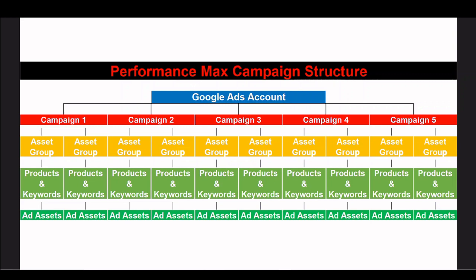Beneath each campaign you'll see I have more than one asset group. This is not always the case — it could be one asset group, two, three, four; it depends on the products. So if we go back to our jewellery example and our necklaces campaign, we may want to split the asset groups into silver and gold necklaces. Asset group one could be silver necklaces — images of silver necklaces, ad copy saying things like 'silver necklaces from £100' or 'silver necklaces sale now on'. Then asset group two you do the same for gold: images of your gold necklaces and ad copy for that range.